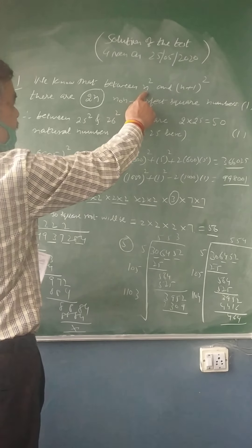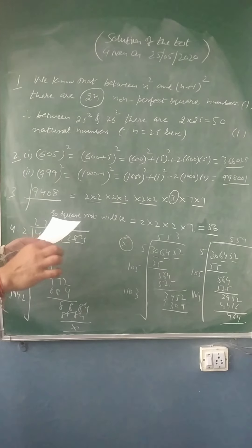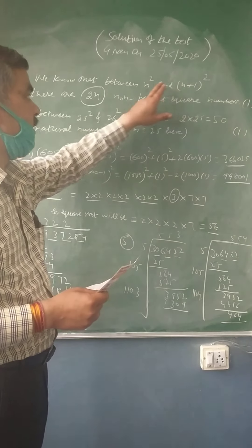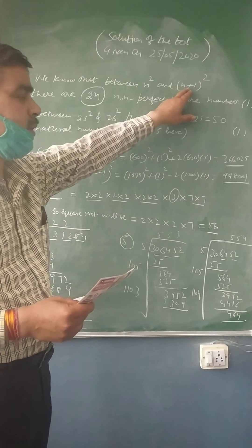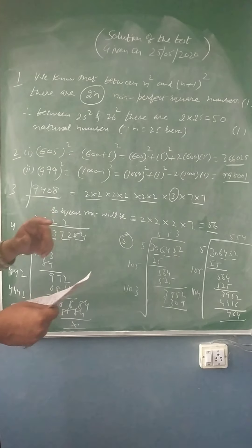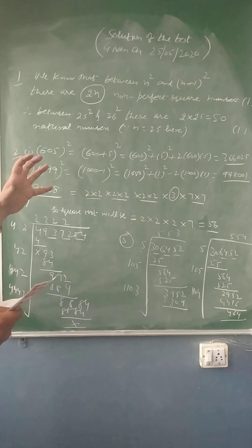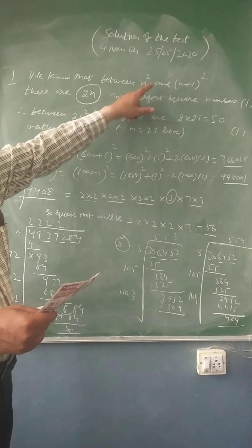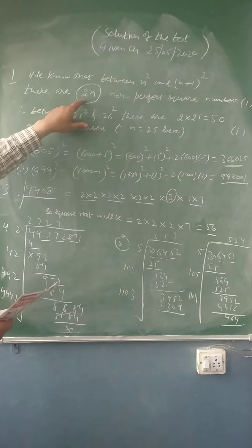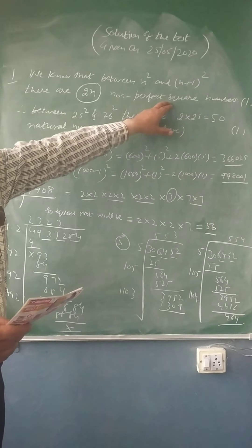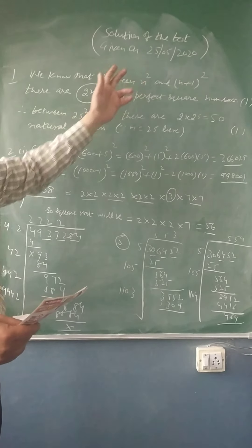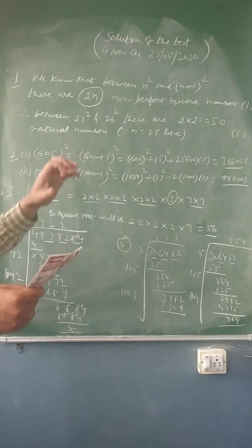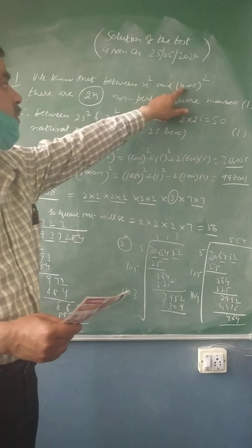We know that between n² and (n+1)², the question is how many natural numbers lie between the squares of consecutive numbers. If one is n then another is n+1, and there are squares. Out of those 20 properties, you can go through them. To find the numbers between the squares of two consecutive numbers, there are 2n non-perfect square numbers. This property we have to apply in question number 1. Here n is equal to 25, because your first number is 25 and the second is 25+1, which is 26.